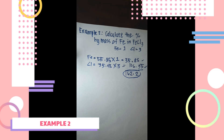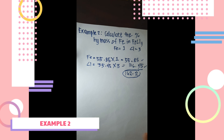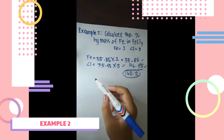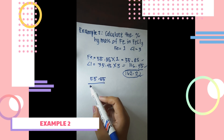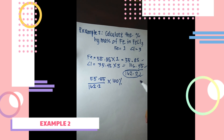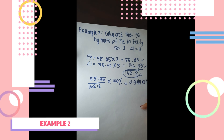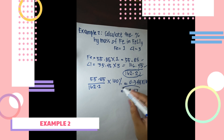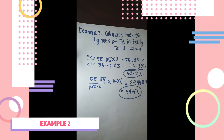We now transpose these values into the percentage composition formula. Since we are asked to find the percentage of iron, we use 55.85. So: 55.85 divided by the whole molar mass of the compound 162.2, multiplied by 100 percent, equals 0.344 multiplied by 100 percent. The final answer is 34.4 percent — that is the percentage of iron in the compound FeCl₃.